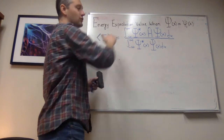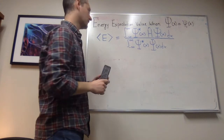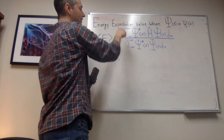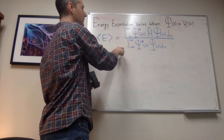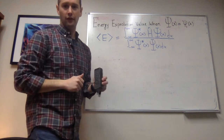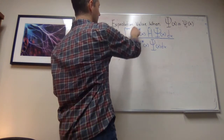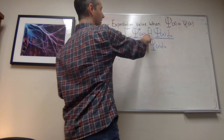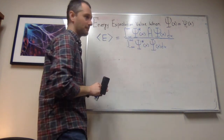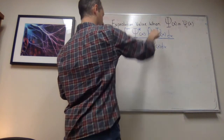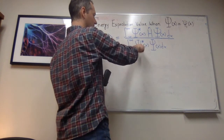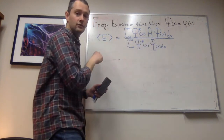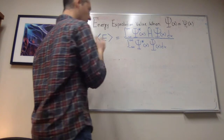Here is the general expression for computing the energy expectation value — it involves two integrals. The numerator is the integral over all space of the wave function's complex conjugate multiplied by the Hamiltonian operator acting on the wave function. The denominator is just the wave function complex conjugate multiplied by the wave function, integrated over all space.